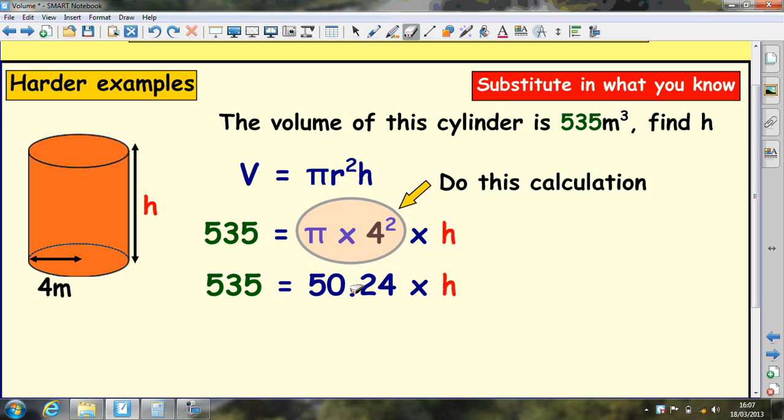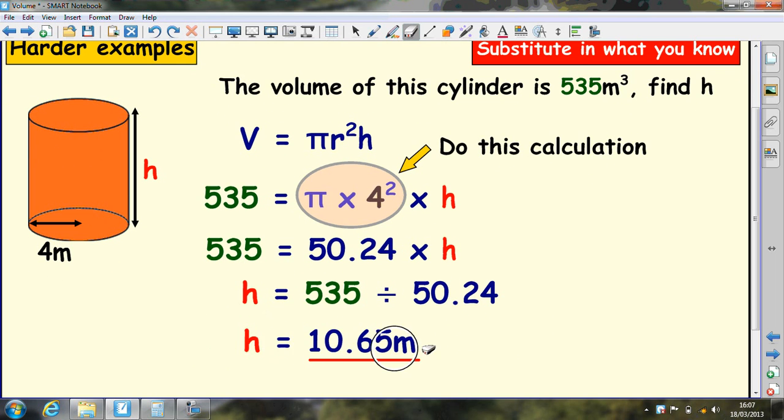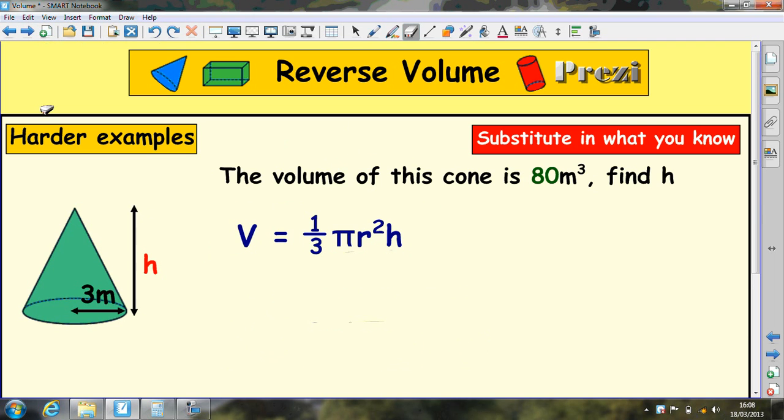So now the question is really saying what do you multiply 50.24 to get 535? All we have to do is divide these two numbers the correct way around. You divide by the 50.24 because you're trying to find how many of these go into 535. So h equals 535 divided by 50.24, and we'll get our height which is 10.65. Look back at the example and see if it makes sense. 10.65 meters. This is 4. That looks about right.